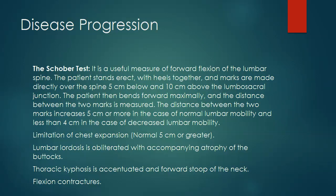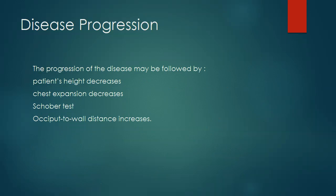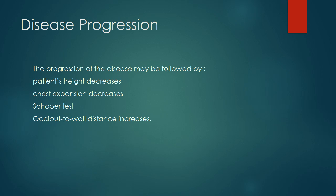As the disease progresses, the lumbar lordosis is obliterated with accompanying atrophy of the buttocks. The thoracic kyphosis is accentuated. If the cervical spine is involved, there may be a forward stoop of the neck. Hip involvement with ankylosis may lead to flexion contractures. The progression of the disease may be followed by measuring the patient's height, which decreases due to aggravated thoracic kyphosis and forward stooping of the neck. Chest expansion decreases with disease progression, producing a restrictive lung disease culminating in type 1 respiratory failure. Occiput-to-wall distance increases with increasing involvement of the cervical spine due to increasing forward stoop of the neck.